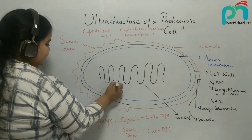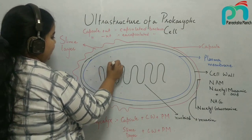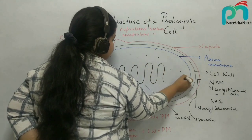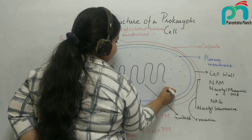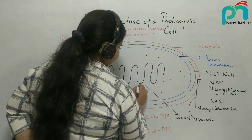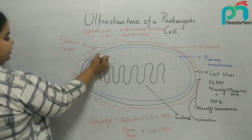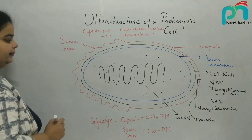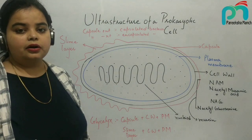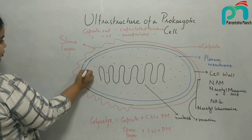Throughout the cytoplasmic matrix, we find ribosomes. In the cytoplasmic matrix, ribosomes can be seen. And these ribosomes are of the 70S type — these are bacterial ribosomes.